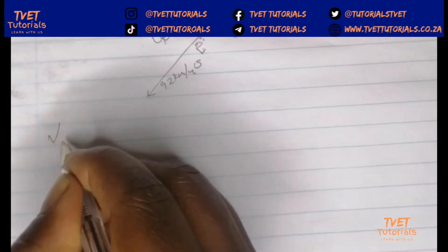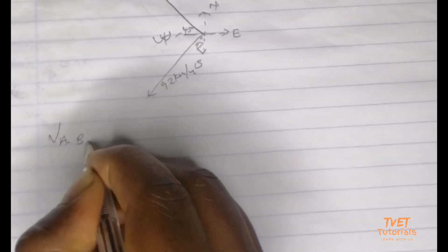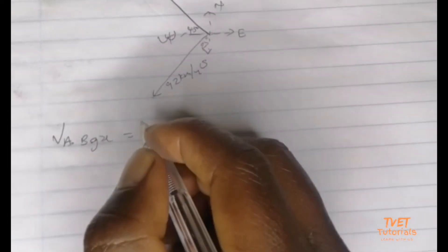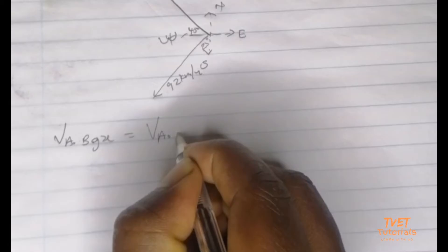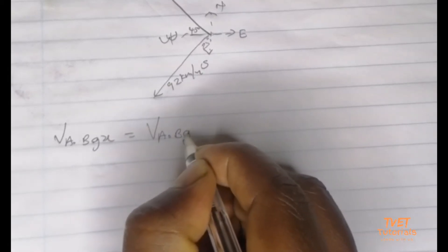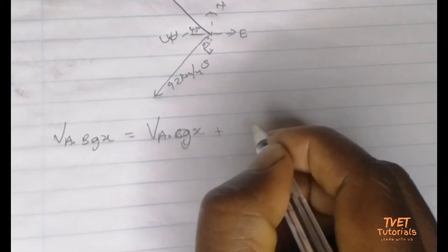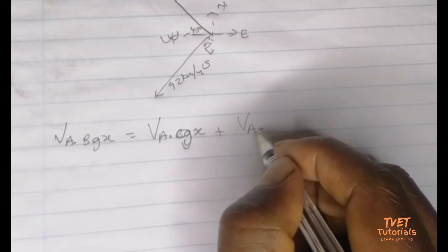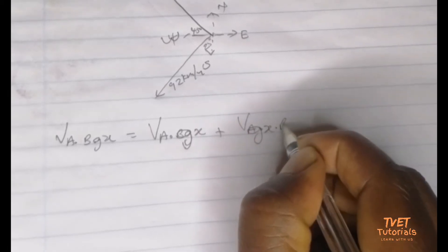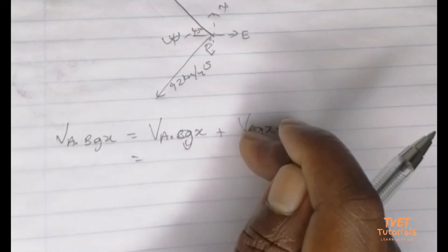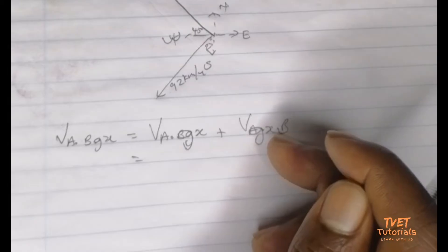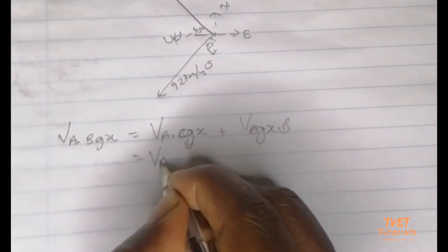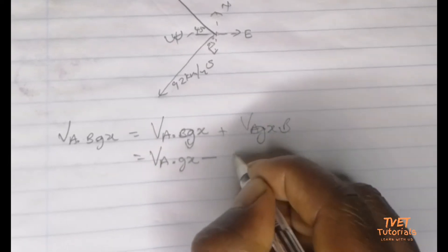We're going to use our formula to calculate velocity of A relative to B in the x-direction. The formula is: velocity of A relative to B (x) equals velocity of A relative to ground (x) plus velocity of ground (x) relative to B. This represents the opposite motion — the horizontal component of the second boat. So we put the formula as: velocity of A relative to ground (x) minus velocity of B relative to ground (x).